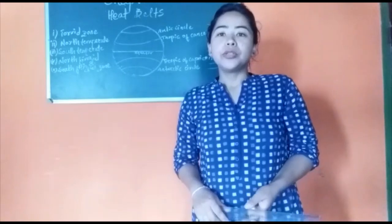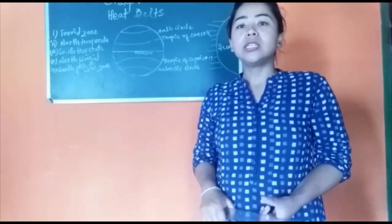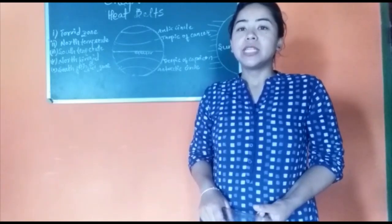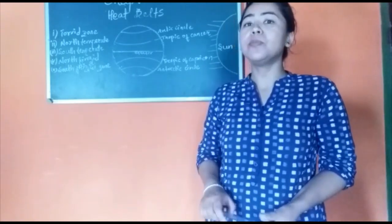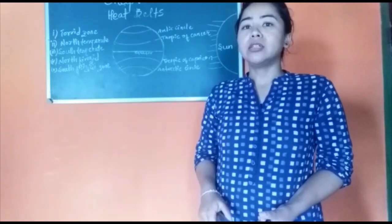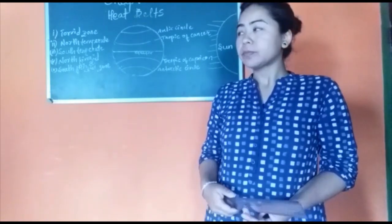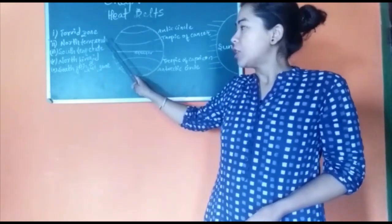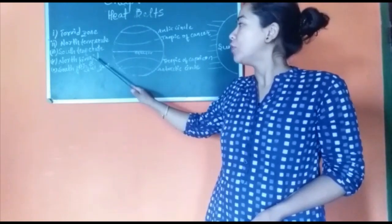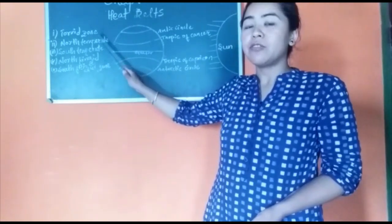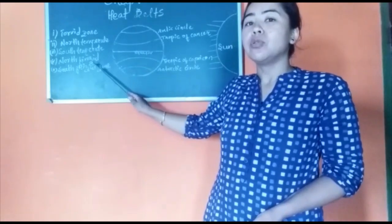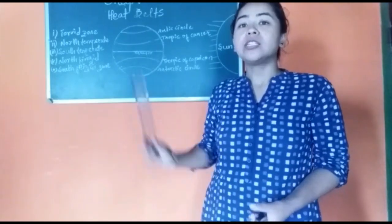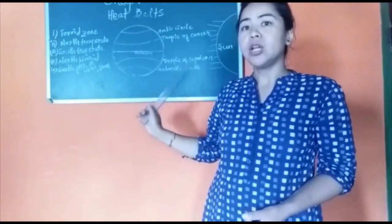In today's class we are going to learn about how the earth is divided into different heat zones on the basis of the heat it receives from the sun. The earth is divided into five heat zones: torrid zone, north temperate zone, south temperate zone, north frigid zone, and south frigid zone. These are the five heat belts that the earth is divided into owing to the difference in the heat the earth receives.